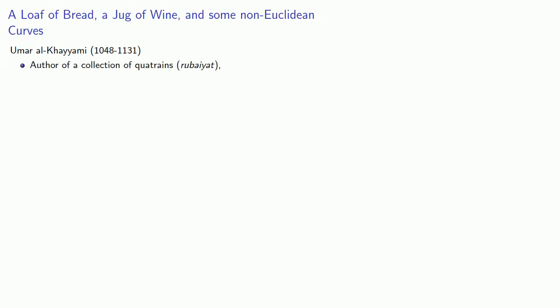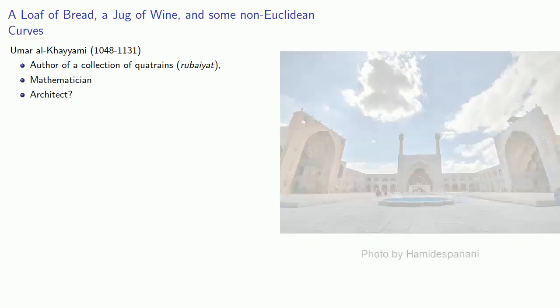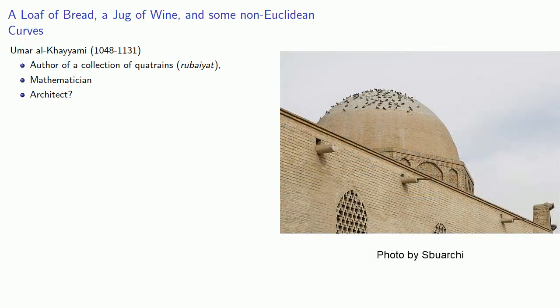These are four-line poems that gained some notoriety in the 19th century when they were translated into English. Khayyami is more important as a mathematician and possibly the architect of the North Dome Chamber of the Friday Mosque in Isfahan.